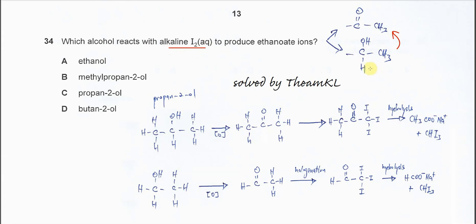So if the alcohol has this group — with this H and this H — they will be removed, and form a methyl ketone. This means the alcohol can be oxidized by alkaline iodine to form methyl ketone. In this question we need to find out which alcohol is able to react with alkaline iodine and eventually produce the ethanoid ion.